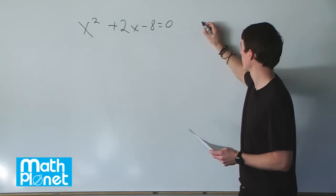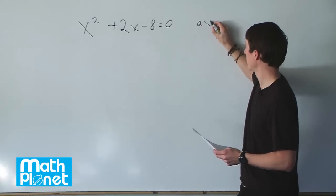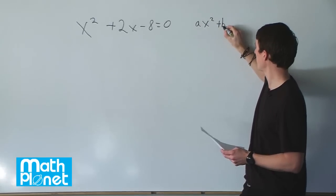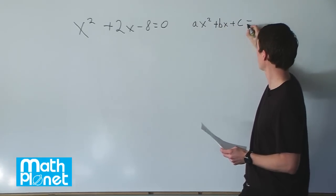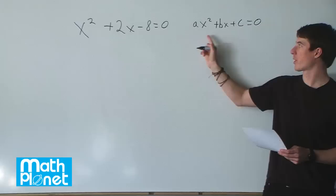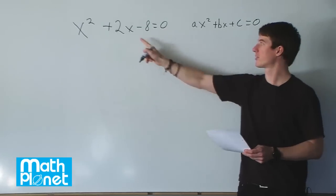So this is already written in the form that we like, which is ax squared plus bx plus c equals 0. So these are the coefficients where we have a is 1, b is 2, and c is negative 8.